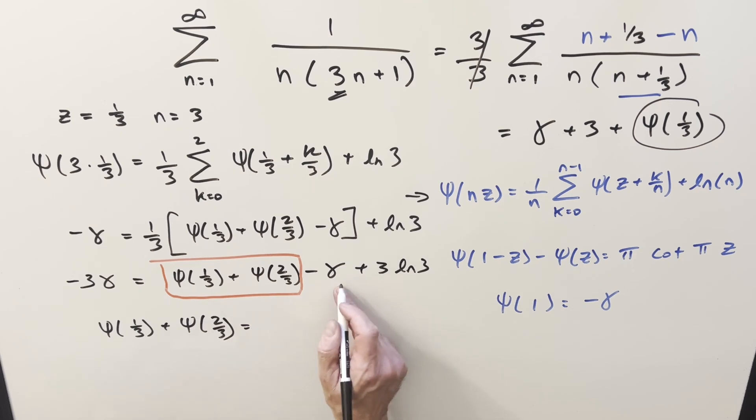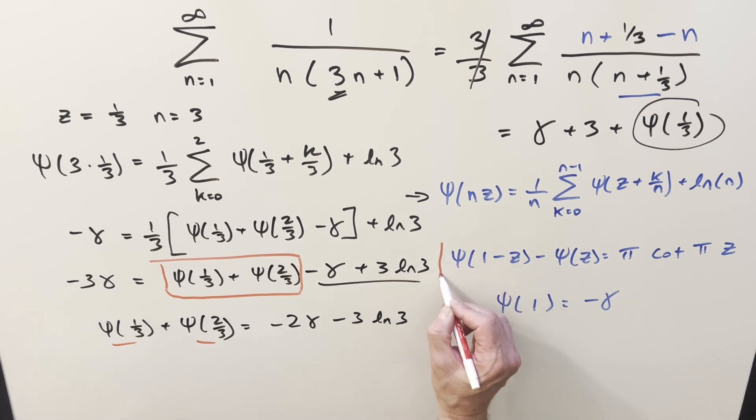So let's isolate those two things, then rearranging, get all this stuff on the other side of the equation. We're going to be adding Euler-Mascheroni constant, we get 2, minus 2 Euler-Mascheroni constant, minus 3 ln 3. And so now we still have two things we don't know, and that's why we need to introduce a second equation.